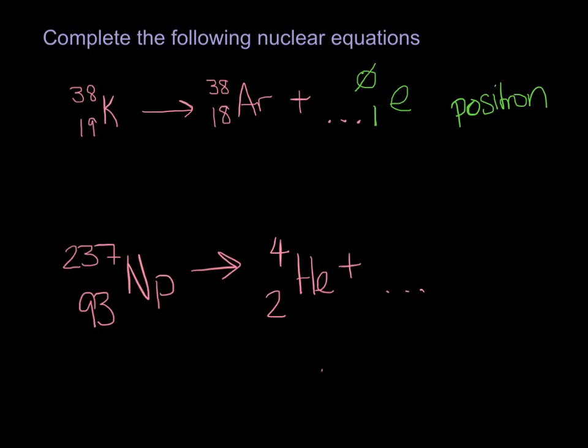Now, in the second example, we have 93 is equal to 2 plus 91. 237 is equal to 4 plus 233. And number 91 on our periodic table, all the way down at the bottom, protactinium. Now, 4, 2, He tells us that this is an alpha particle.